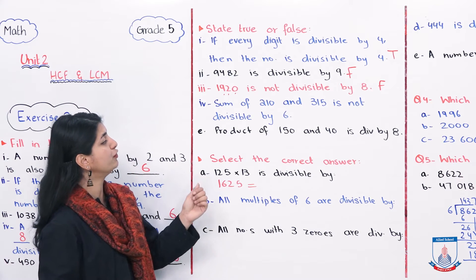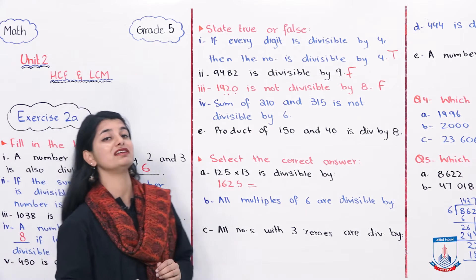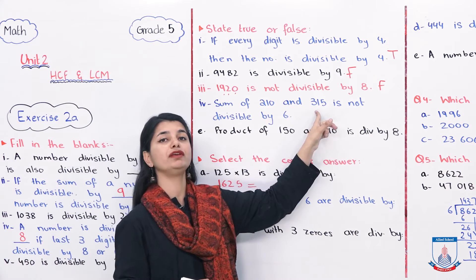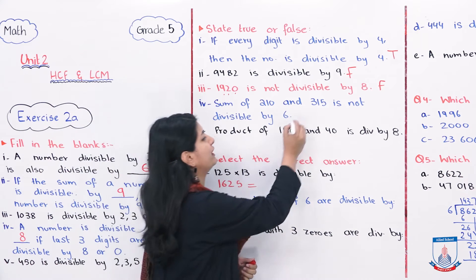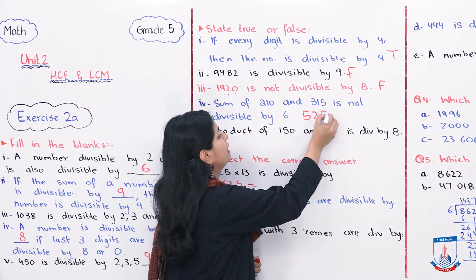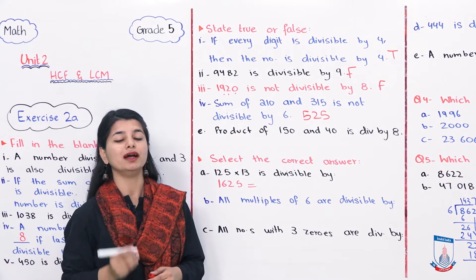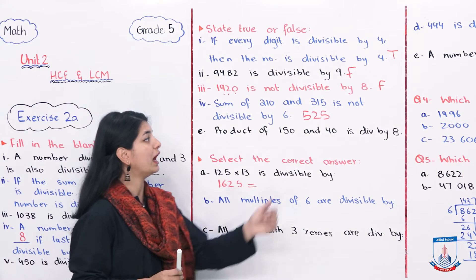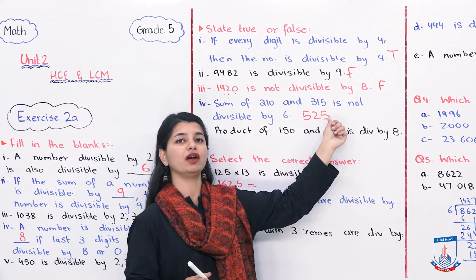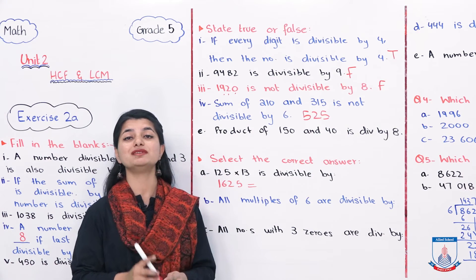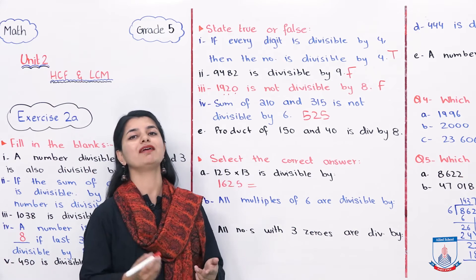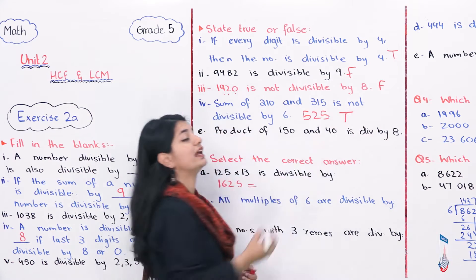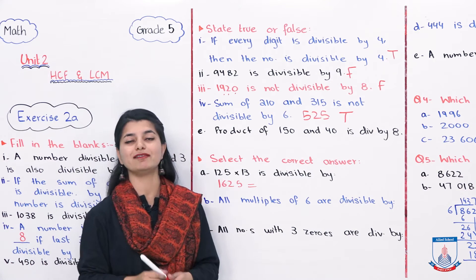Next is: sum of 210 and 315 is not divisible by 6. So we have to add these, 210 and 315. When will it be divisible by 6? It will be divisible if it is divisible by both 2 and 3. The sum is 525. Now 525 ends in 5, so it is not divisible by 2, and therefore it is not divisible by 6. So this statement is true.